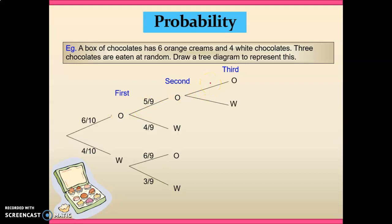So for our orange creams, there are only four orange creams remaining out of our potential eight, because we've eaten one in the first instance and one in the second instance. Now that means the remaining four chocolates are not orange creams, so the remaining four are obviously the white chocolates.